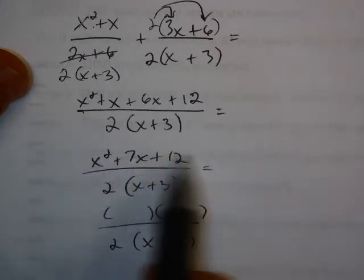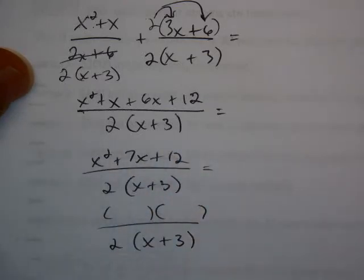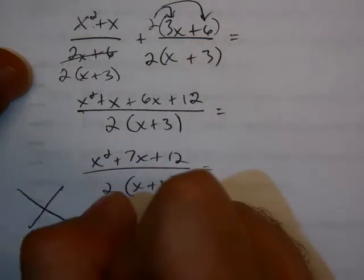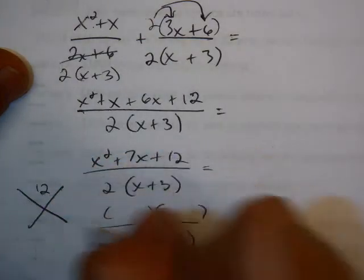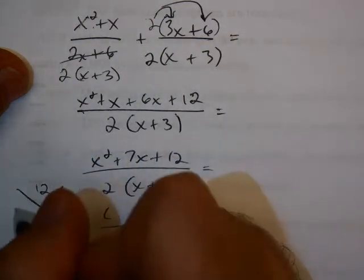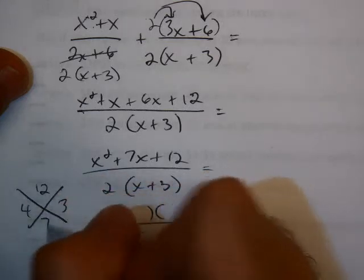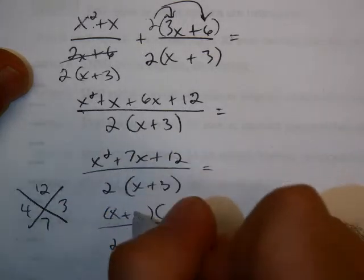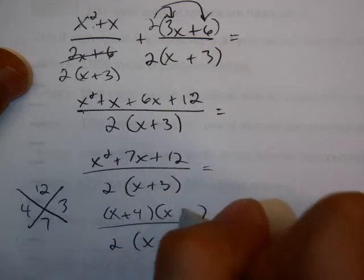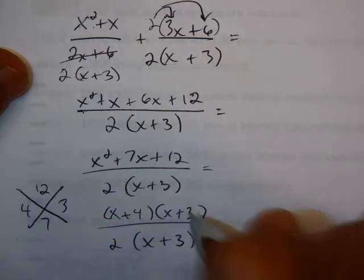I'm going to try to factor this to see if I can get two factors using my diamond. The 12 will go on top, the 7 on the bottom. 4 and 3 works: 4 times 3 is 12, 4 plus 3 is 7. And the signs are nice because they're all positive. So I'm going to have x plus 4, x plus 3.